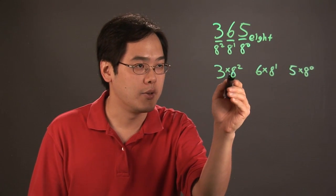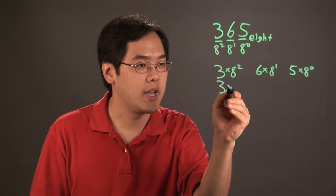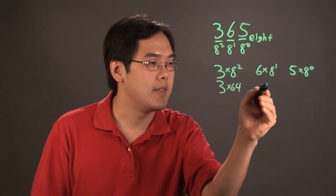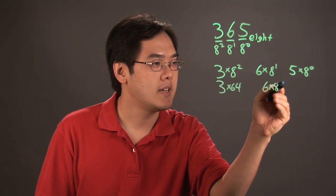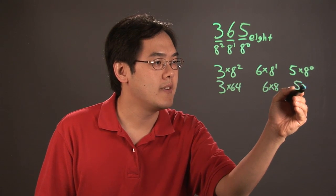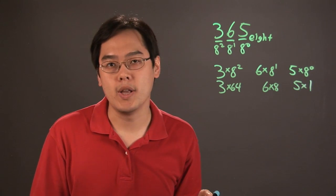Now what you want to do is simplify some of this. This would be 3 times 64. Then it would be 6 times 8. And then this would be 5 times 8 to the 0, which as you know is 1.